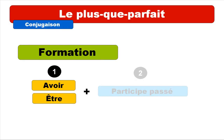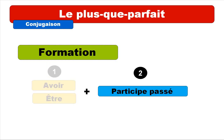So, if you want to construct le plus que parfait, keep in mind that as with all the composed tenses in the French language, first you will have to use avoir and être, and then you will have to use le participe passé.